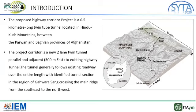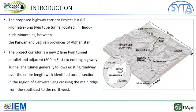This proposed highway project is a 6.5 kilometer long twin-tube tunnel located in the Hindukush mountains in the province of Afghanistan. This project is a new two-lane twin tunnel project, which is parallel to an existing highway tunnel, and it generally follows the existing roadway over the entire length with the identified tunnel section from the southeast to the northwest of the region. In the figure, you can see the tunnel locations, the north entrance, the south entrance, along with the highway design path.